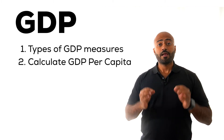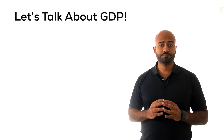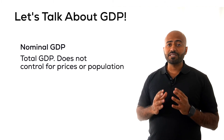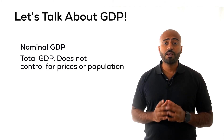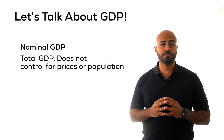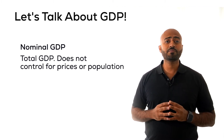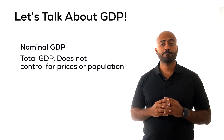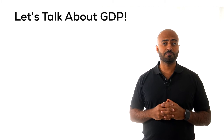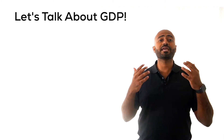Let's start with some definitions. There are several ways to talk about GDP and each one of them is useful in its own way. First is nominal GDP. Nominal GDP is the total GDP. Nominal means that it does not control for cost of living or differences in population, so it isn't a good measure to use when we want to compare across time or compare different country sizes. We will use nominal GDP to calculate more accurate measures of GDP. Using it alone is actually misleading and can lead us to make inaccurate assessments.